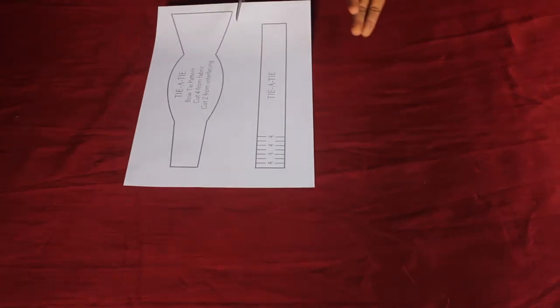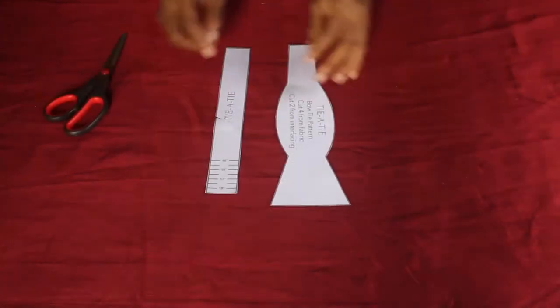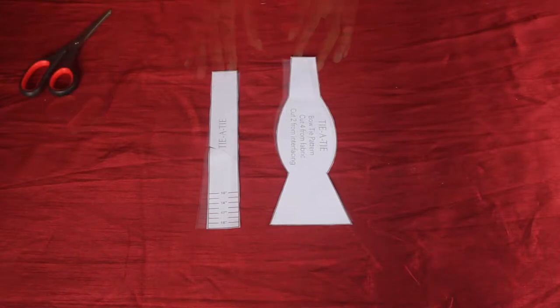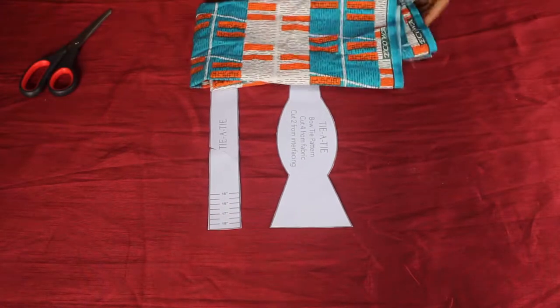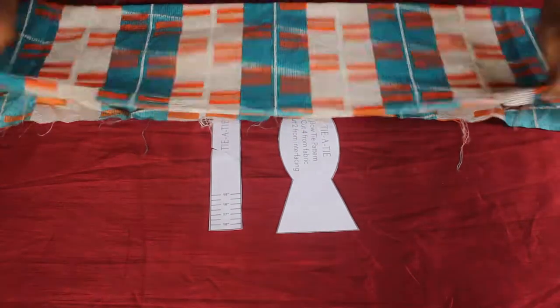We're going to cut out the pattern paper next. I'm not sure what the guidelines are for bowtie fabric, but I pretty much use any kind of fabric I have lying around. The one I'm using right now is called Ankara, it's a Nigerian fabric.